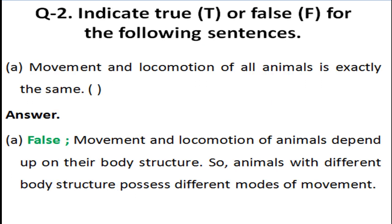Our next question is to indicate true or false. First sentence: movement and locomotion of all animals is exactly the same. The answer is false, because the correct statement is that movement and locomotion of animals depend on their body structure. Animals with different body structures possess different modes of movement.